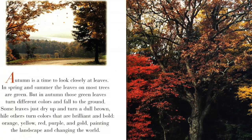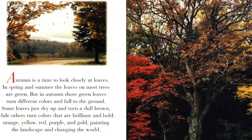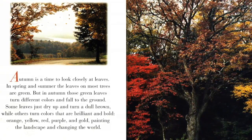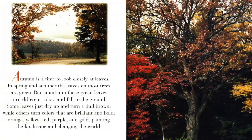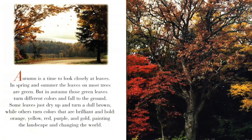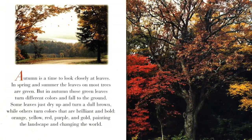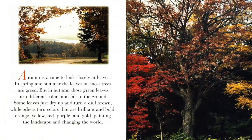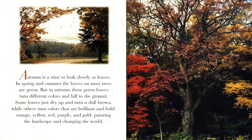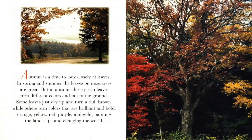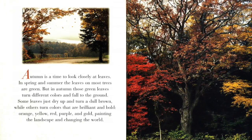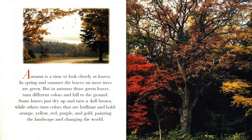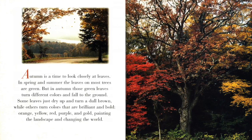Autumn is a time to look closely at leaves. In spring and summer, the leaves on most trees are green. But in autumn, those green leaves turn different colors and fall to the ground. Some leaves just dry up and turn a dull brown, while others turn colors that are brilliant and bold.